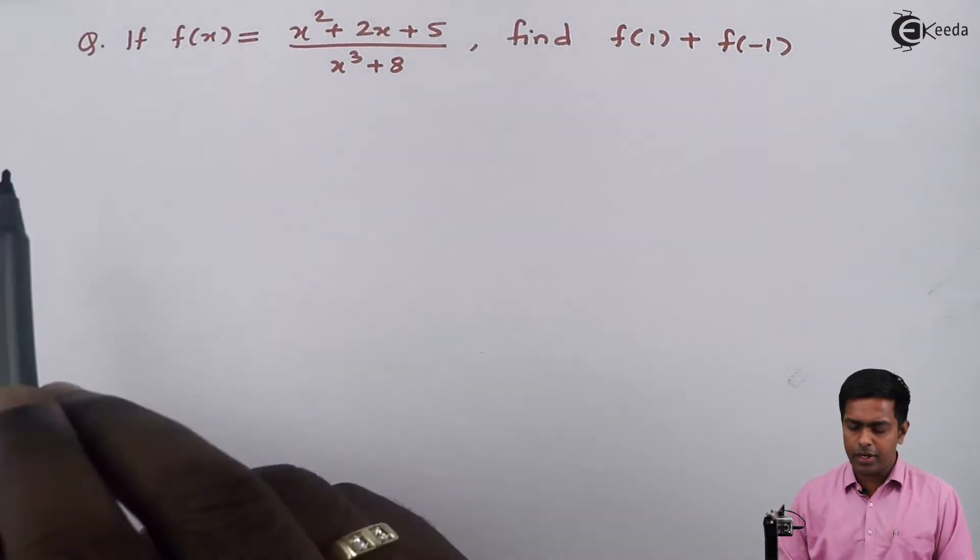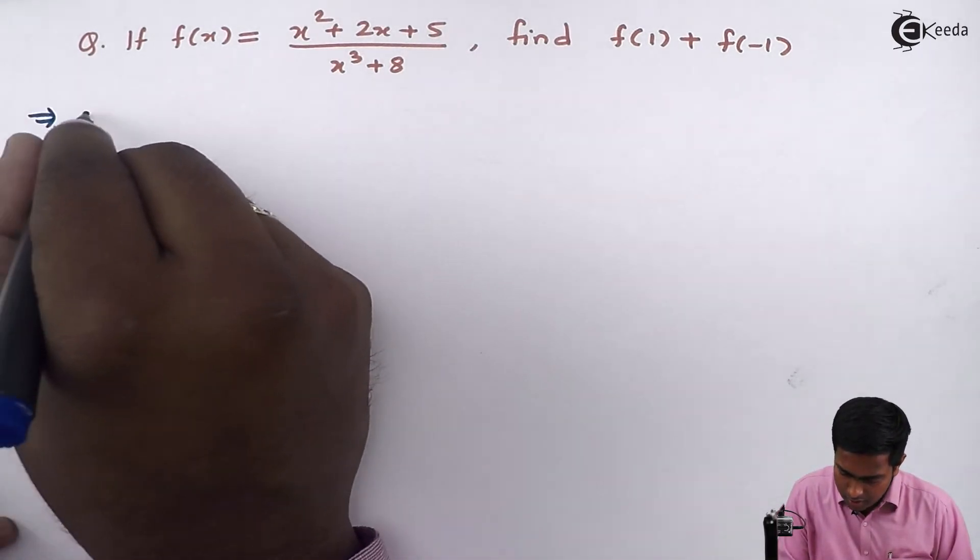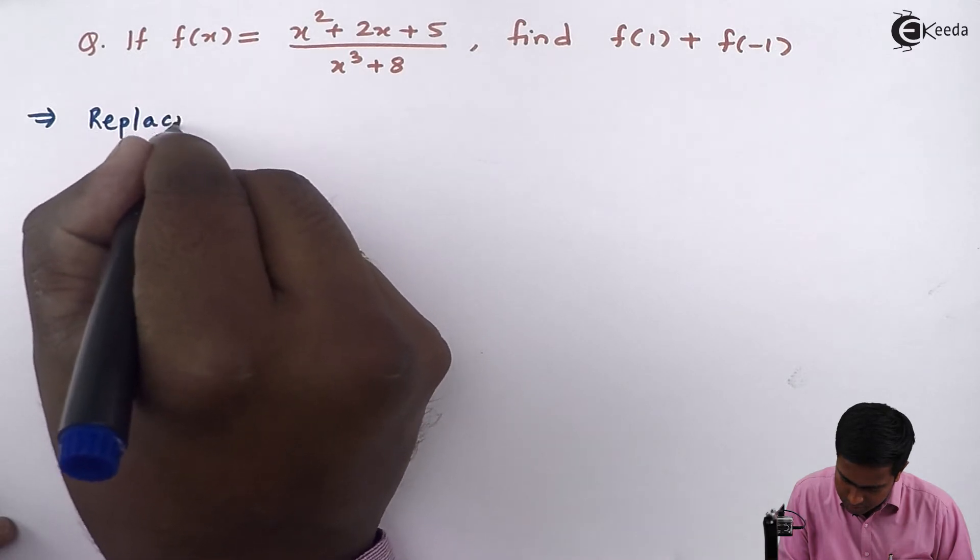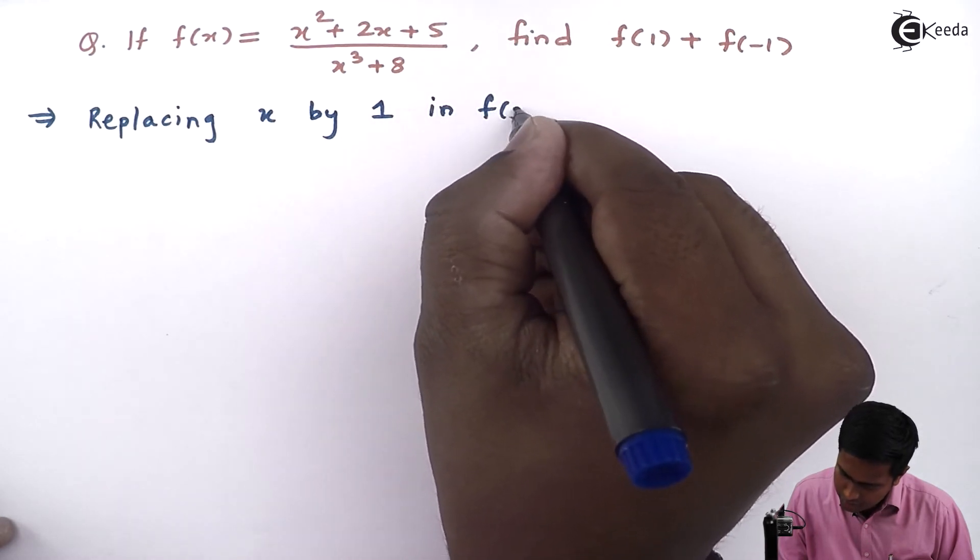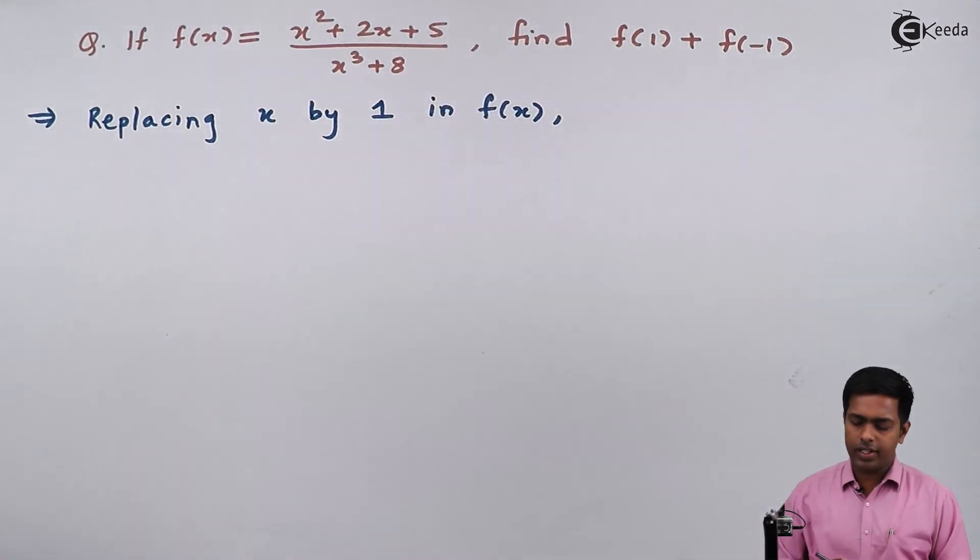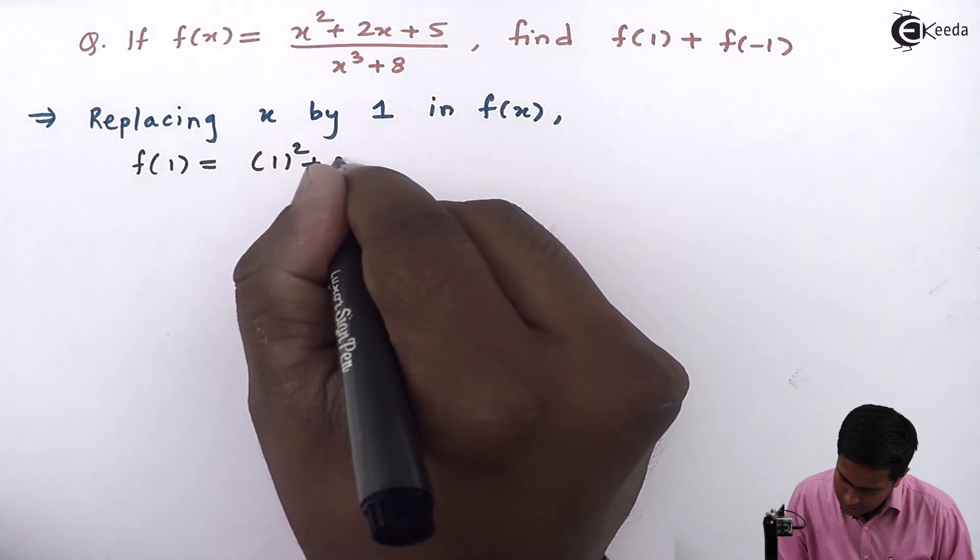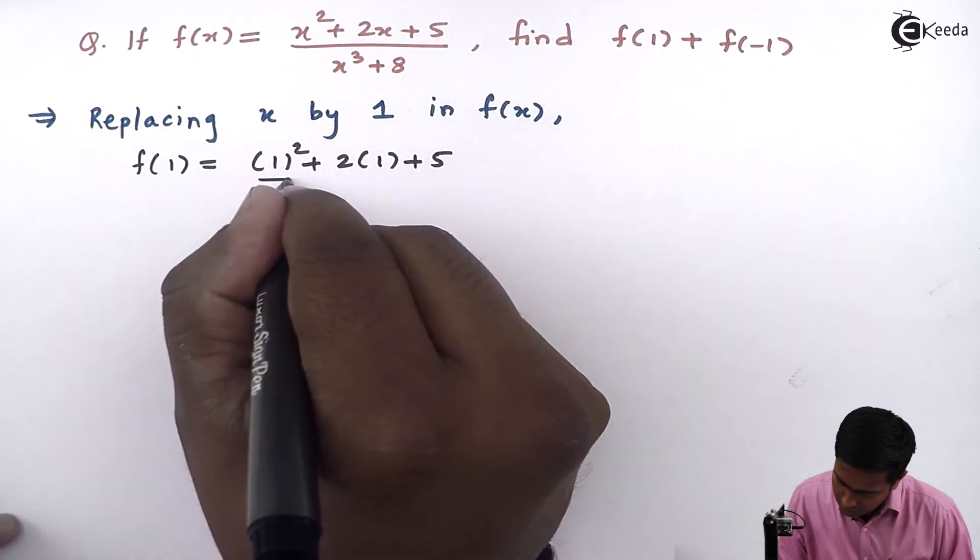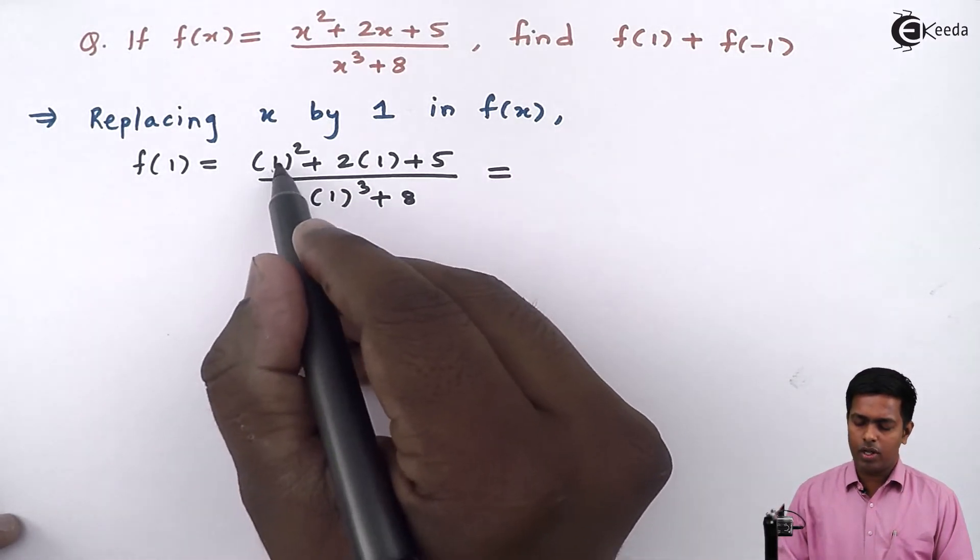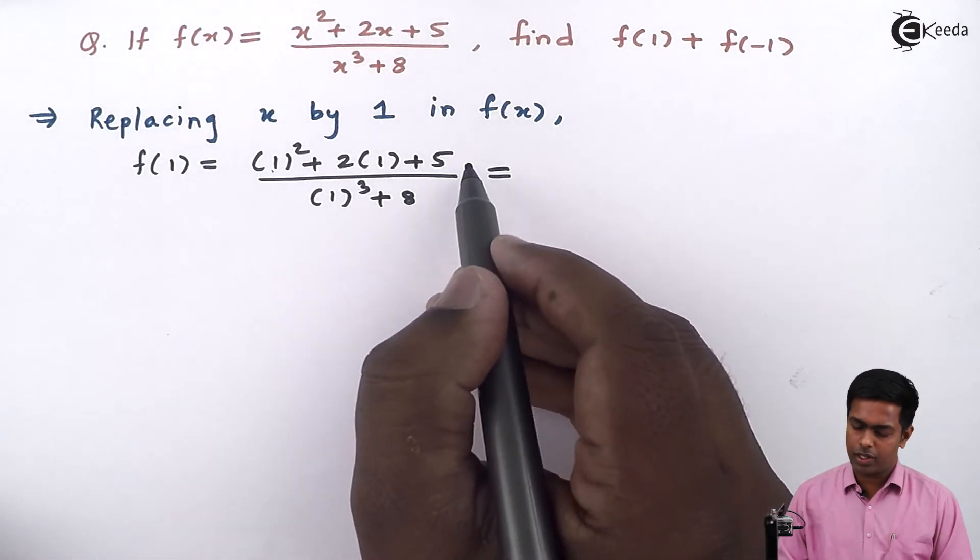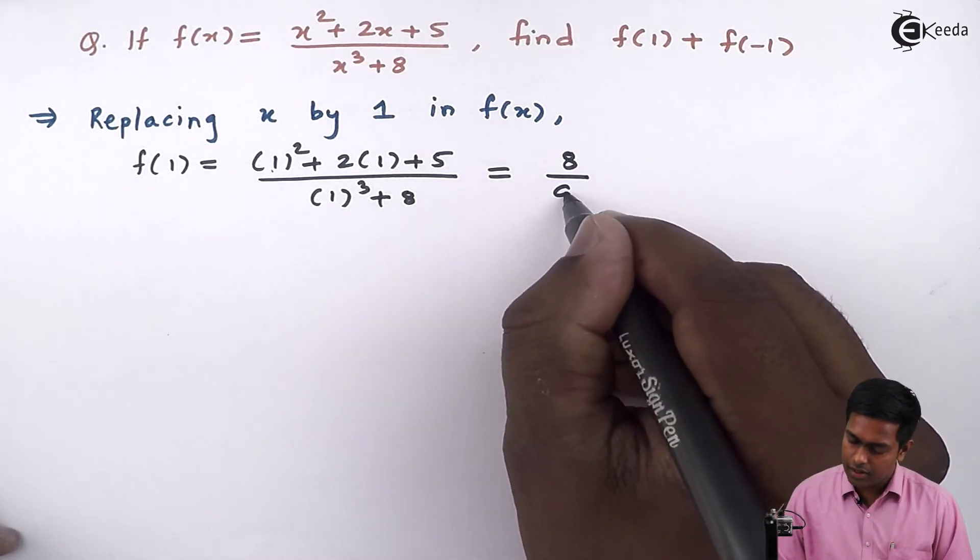To get the value of f(1), I will replace x by 1 in f(x). Replacing x by 1 in f(x), we get f(1) = (1² + 2(1) + 5)/(1³ + 8), which becomes (1 + 2 + 5)/(1 + 8) = 8/9.